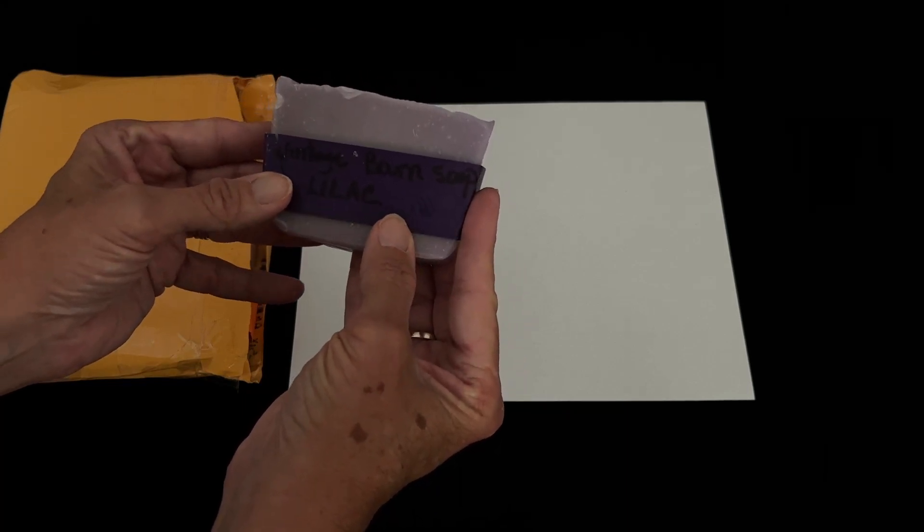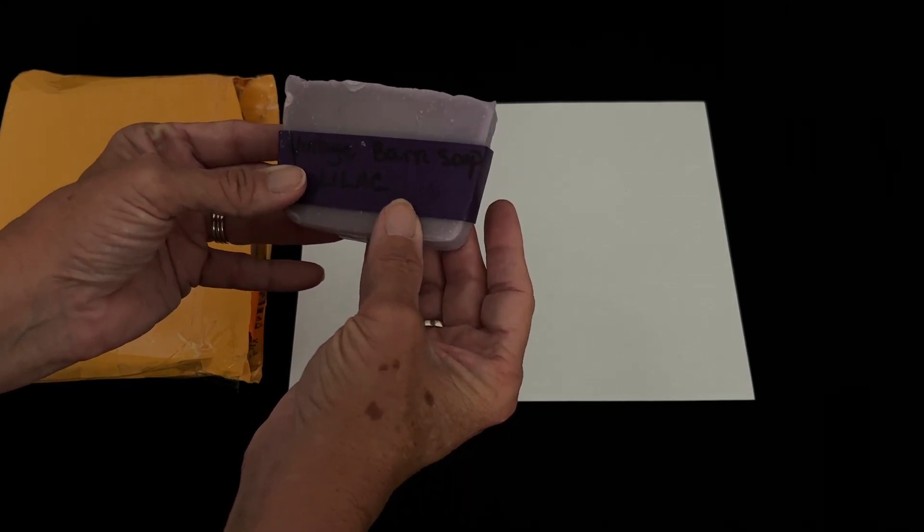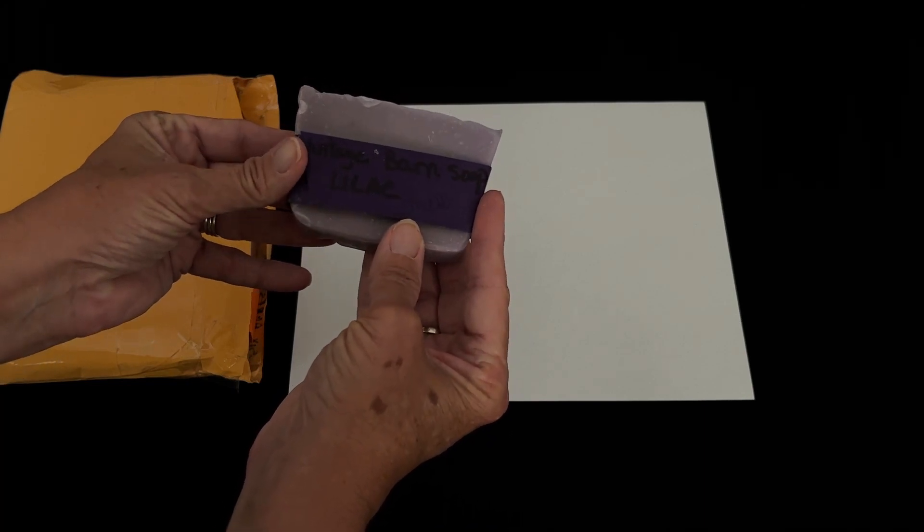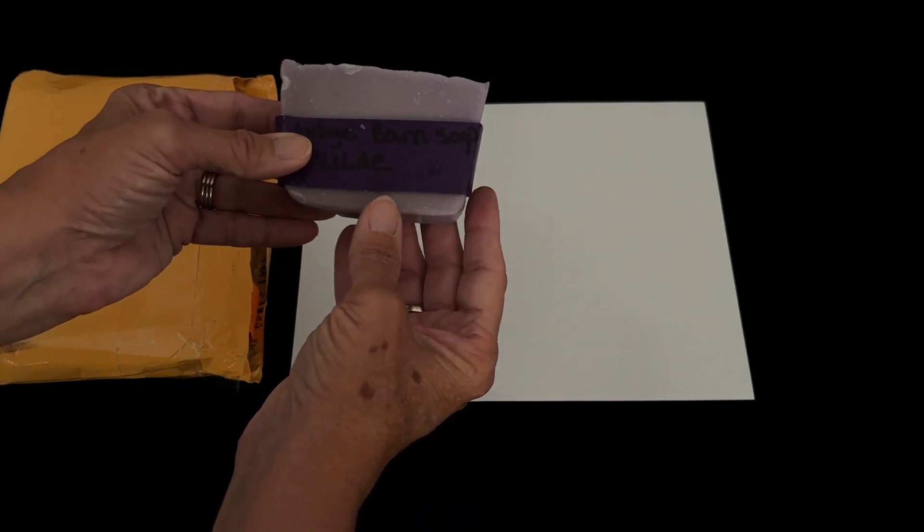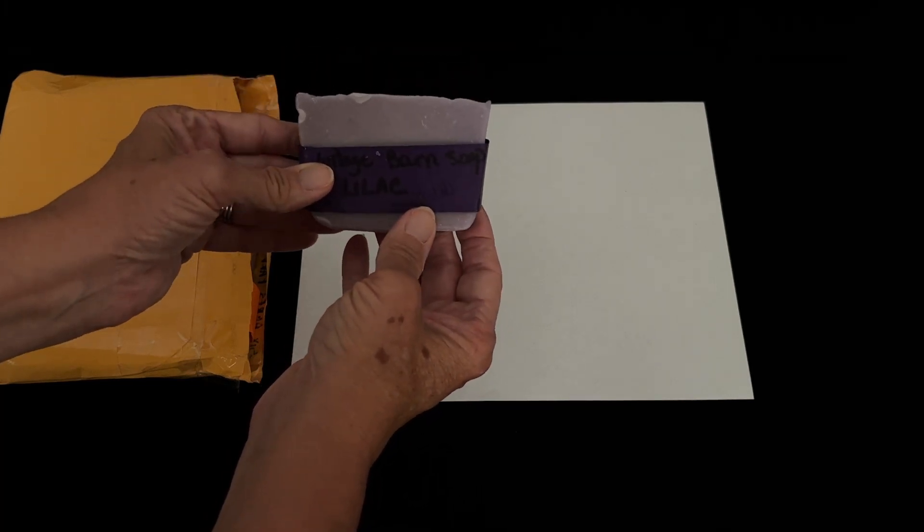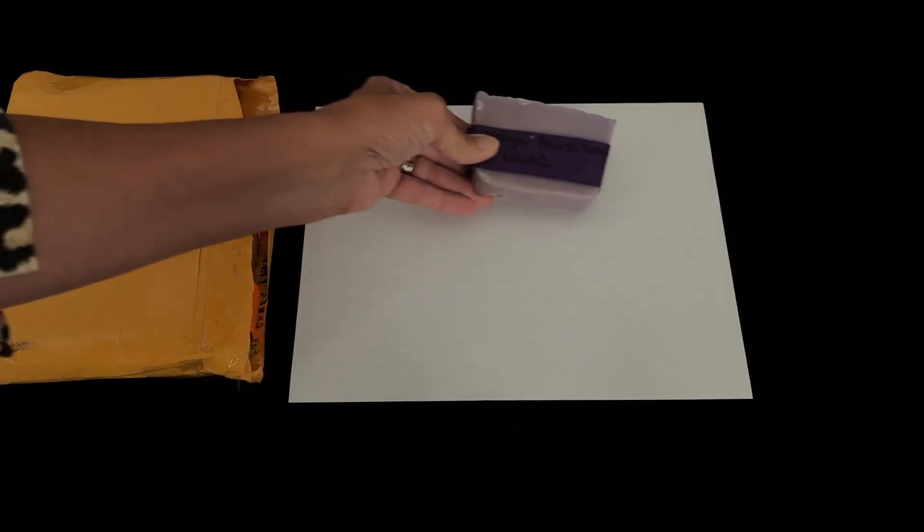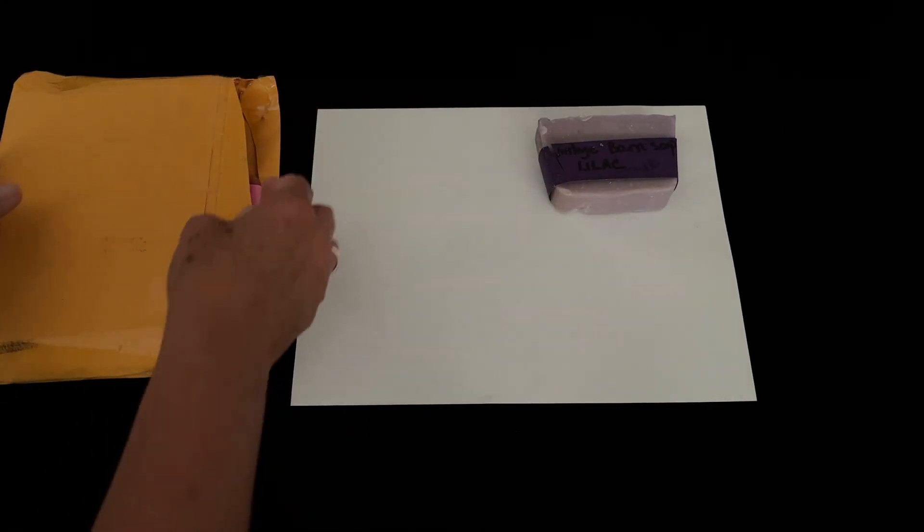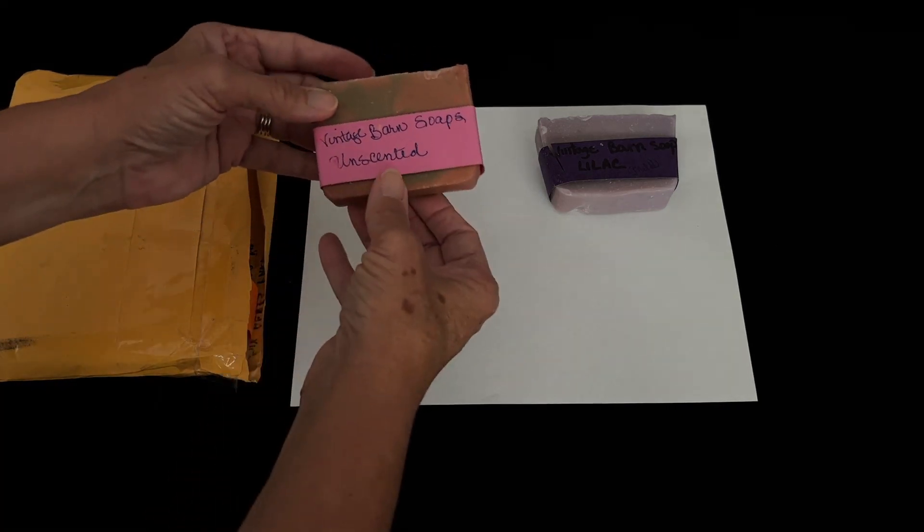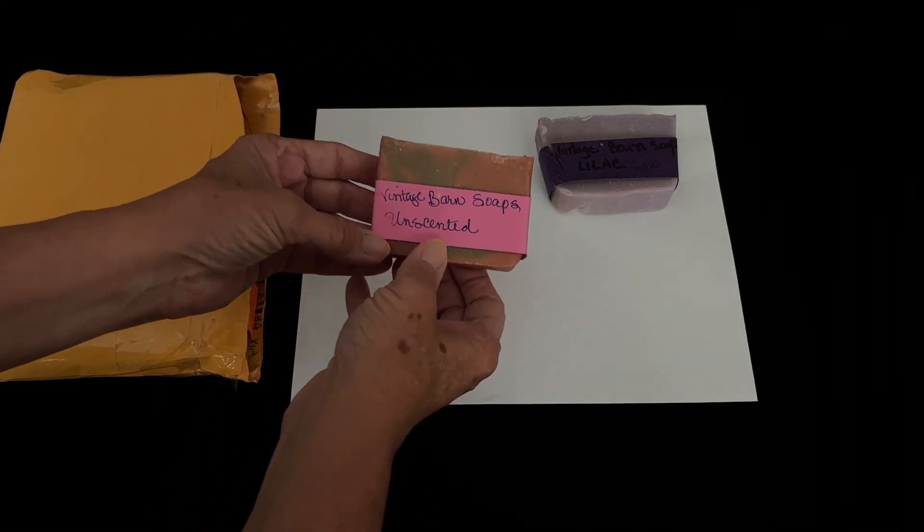And what does that say? Vintage Barn Soap. And it's got a lilac scent to it and it says mild. It's really pretty. This is handmade. And on her channel, she went through the process of making the soap and I found it very interesting. That's pretty. Vintage Barn Soap.